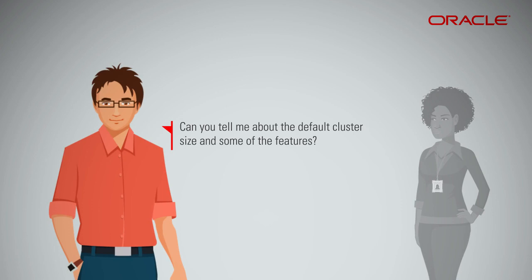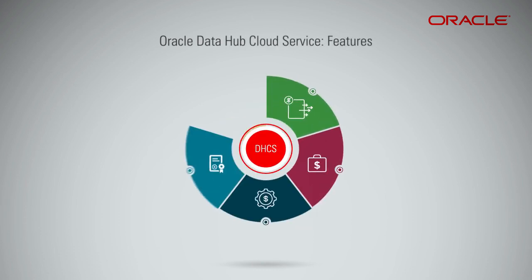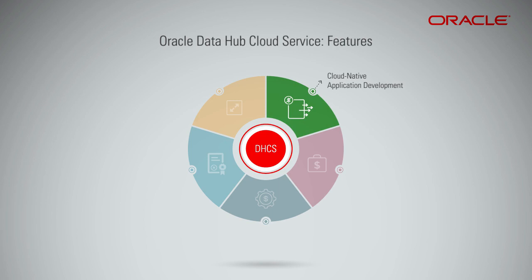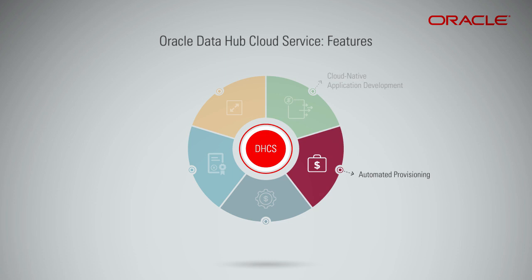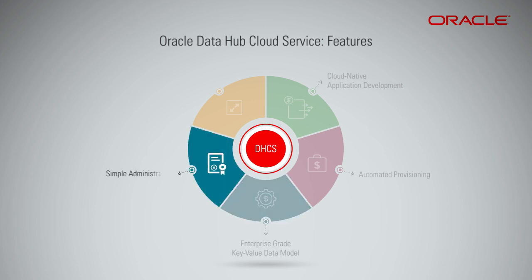The default cluster size is three nodes within the cluster, wherein each node is one OCPU. The Oracle Data Hub Cloud Service has the following features: Cloud Native Application Development, DevOps Ready, Cloud Enabled, and Automated Provisioning — offering fully automated provisioning to enable you to provision multiple database clusters in under a minute. Enterprise Grade Key Value Data Model: based on Apache Cassandra, the service offers an enterprise-grade, wide column key-value distributed data store for cloud-native applications. Simple Administration allows you to easily handle common tasks such as backup, restore, and so on, resulting in low administration overhead. Elasticity lets you easily scale out or scale in on demand to dynamically handle application throughput.